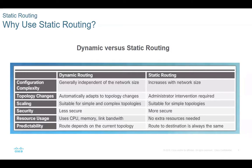Another real drawback of static routing is that administrative intervention is required — you have to go and troubleshoot it, watch over it, and set it up manually — whereas dynamic routing automatically learns. It's also considered less secure, but you've got to take that with a grain of salt because we have other devices that give us security. As for using more CPU, memory, and bandwidth — routers are getting so dynamic now that that argument is becoming less relevant.